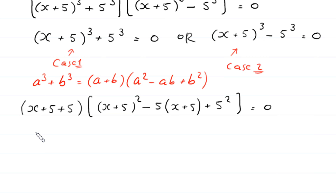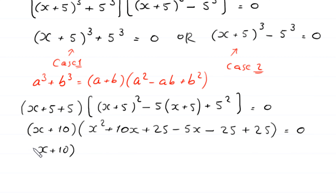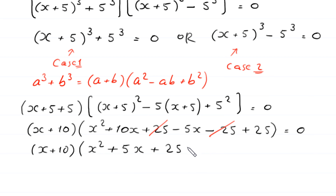Now x + 5 + 5 becomes (x + 10). Expanding (x + 5)² gives x² + 10x + 25, and subtracting 5(x + 5) gives minus 5x minus 25, plus 5² which is 25. The 25 terms cancel, leaving (x + 10)(x² + 5x + 25) is equal to 0.